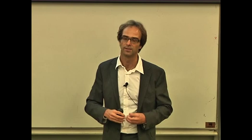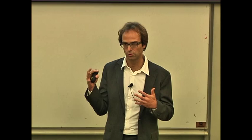Each model cannot always outperform the other — we have conditions with the non-intuitive name of non-compensatoriness and compensatoriness. Non-compensatoriness means basically that one feature is much more informative than all the others, so you can forget all other features and just use one for predicting. The opposite label, compensatoriness, is when features compensate for each other, and in that case you may do better with a standard decision model. I've summarized many of these results and the reasons for why they exist in a recent paper.